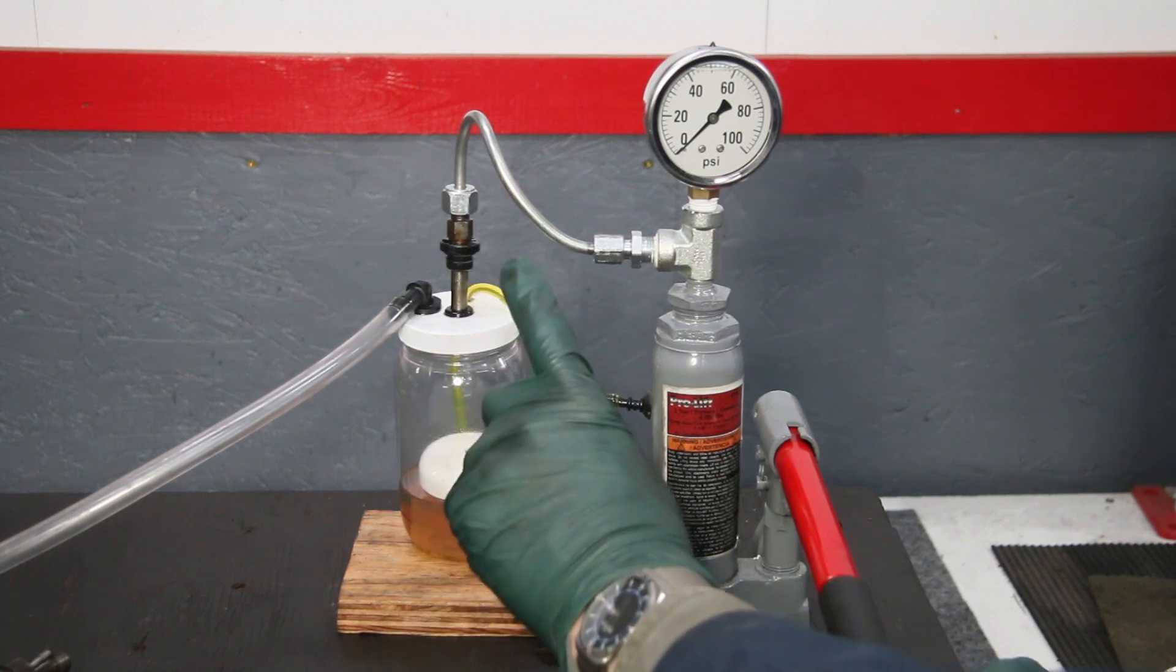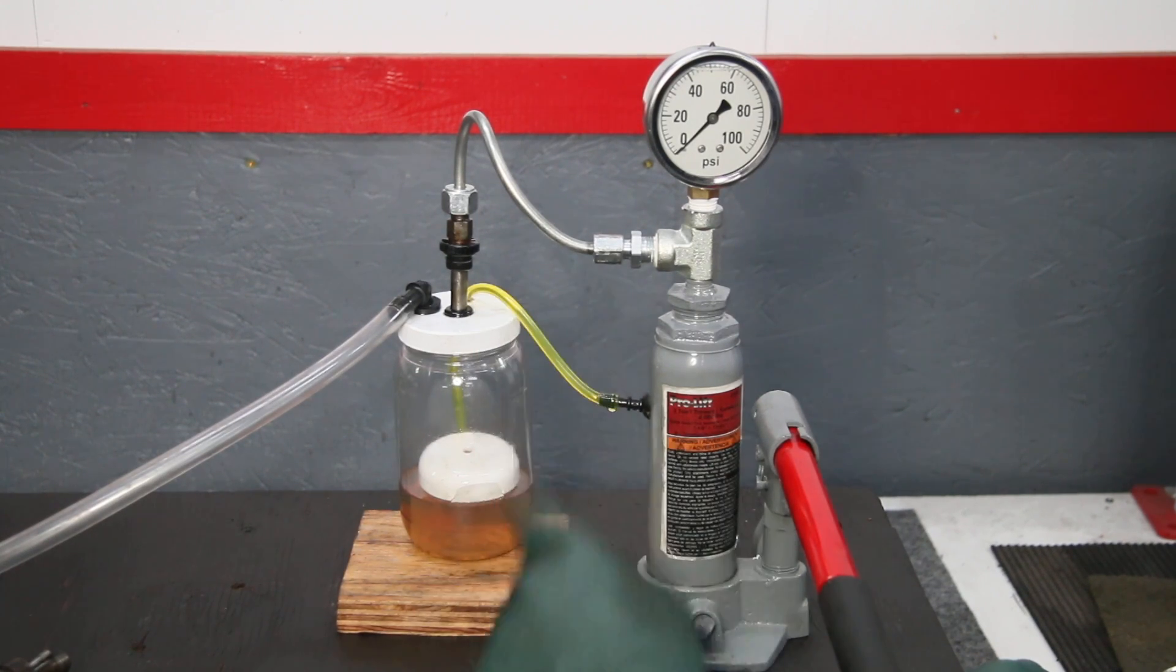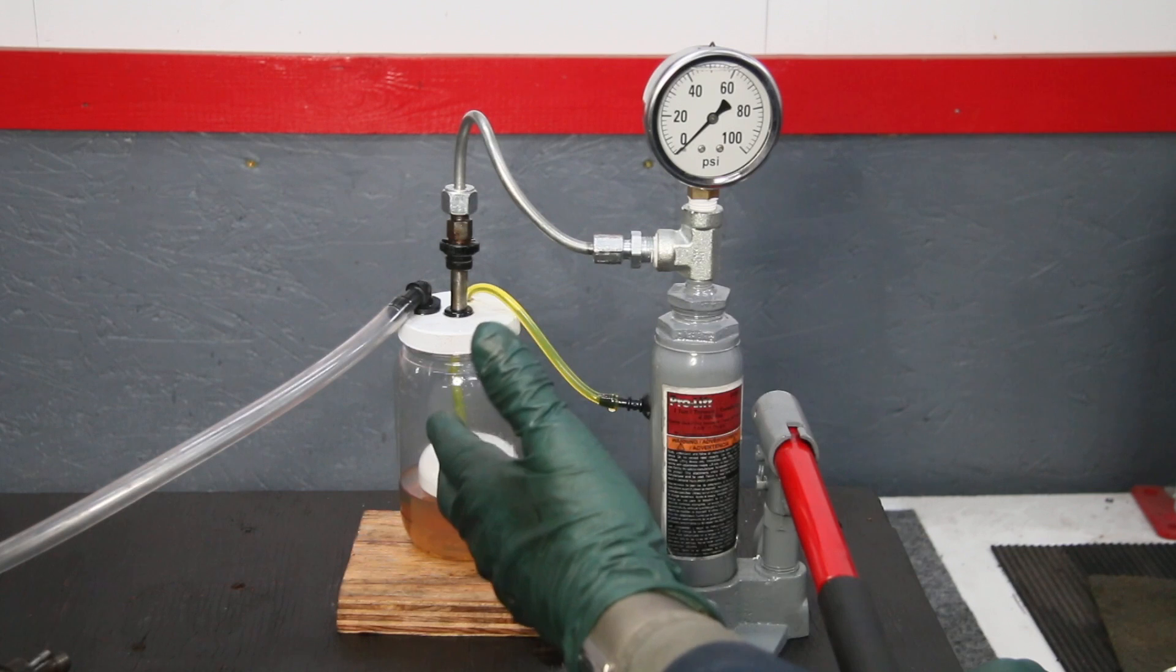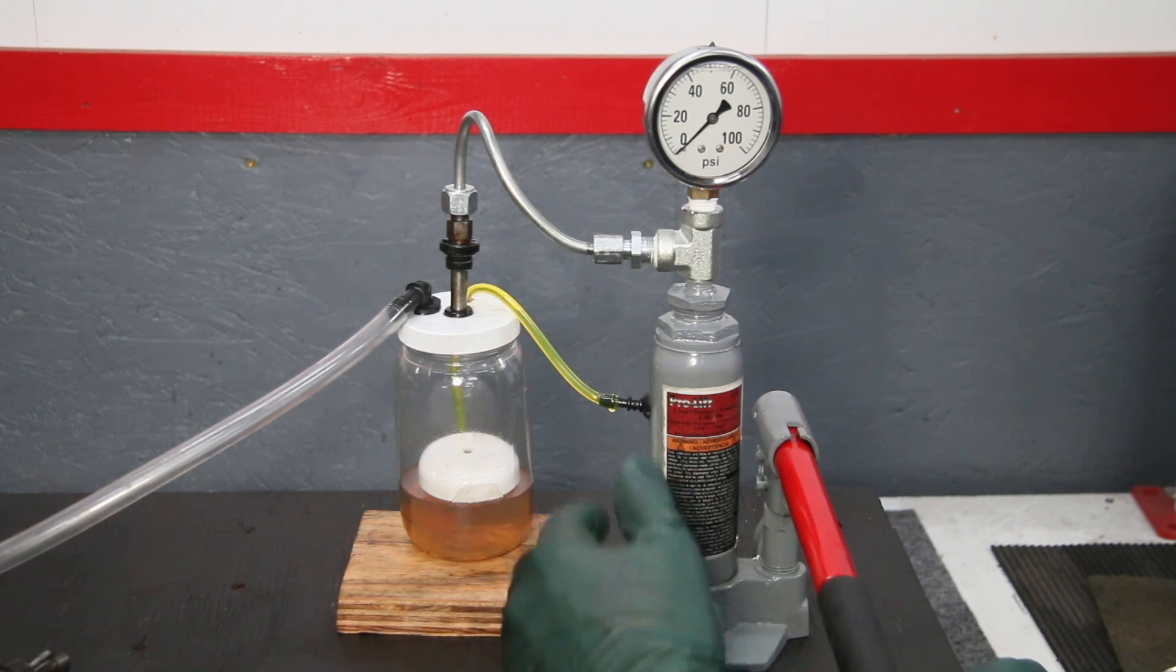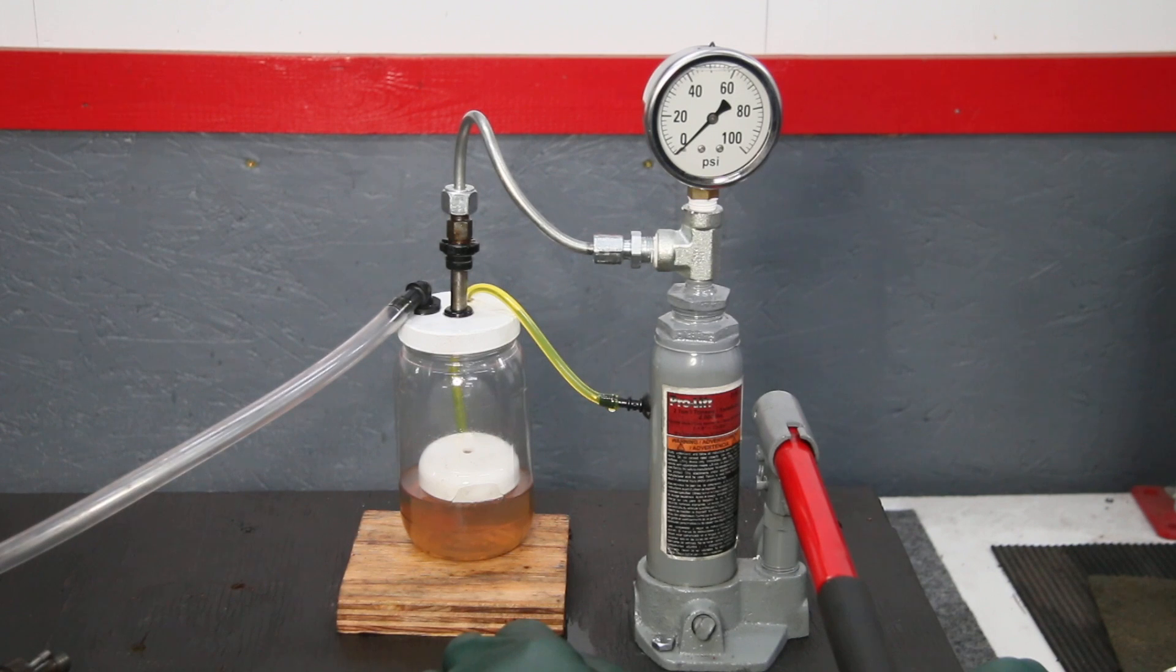So this particular fuel injector, by the way, came out of a 78 450 SL. You could have all kinds of starting issues. You could have it leaking down and flooding the cylinders overnight. So when you try to start it, you've got excessively rich mixture. You're going to have smoke, smoking problems, and you're going to have terrible fuel economy.